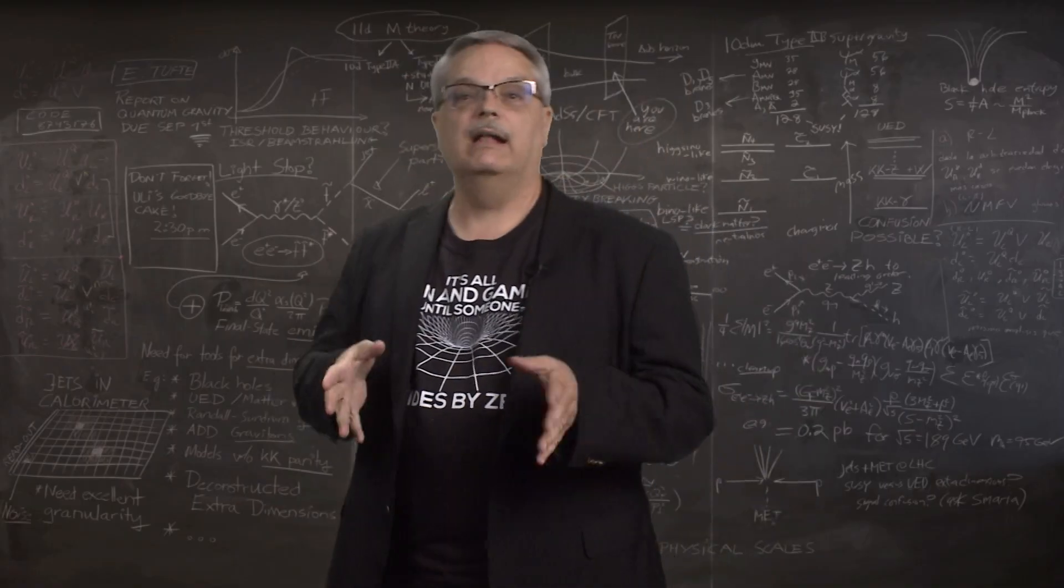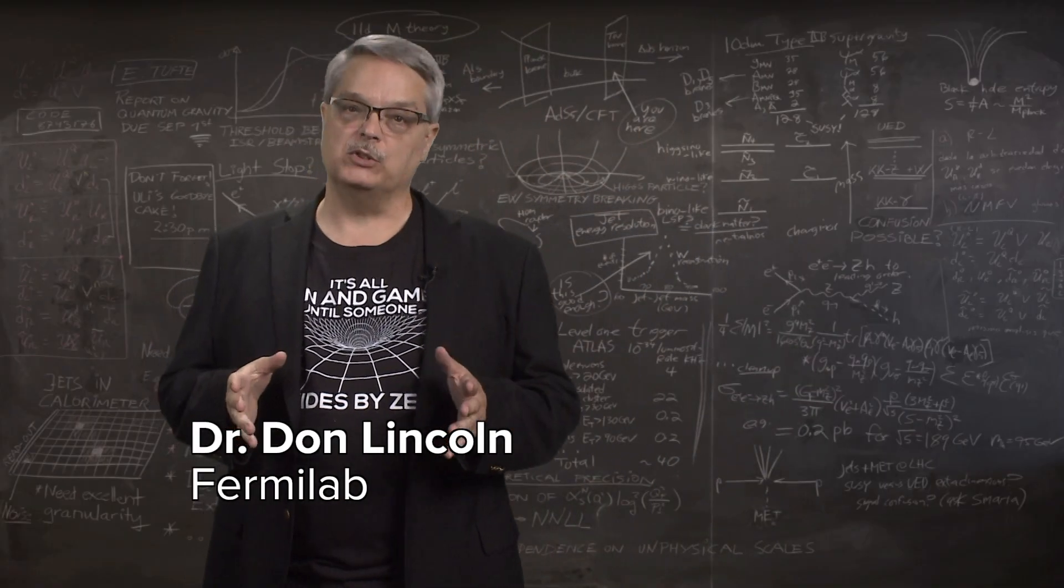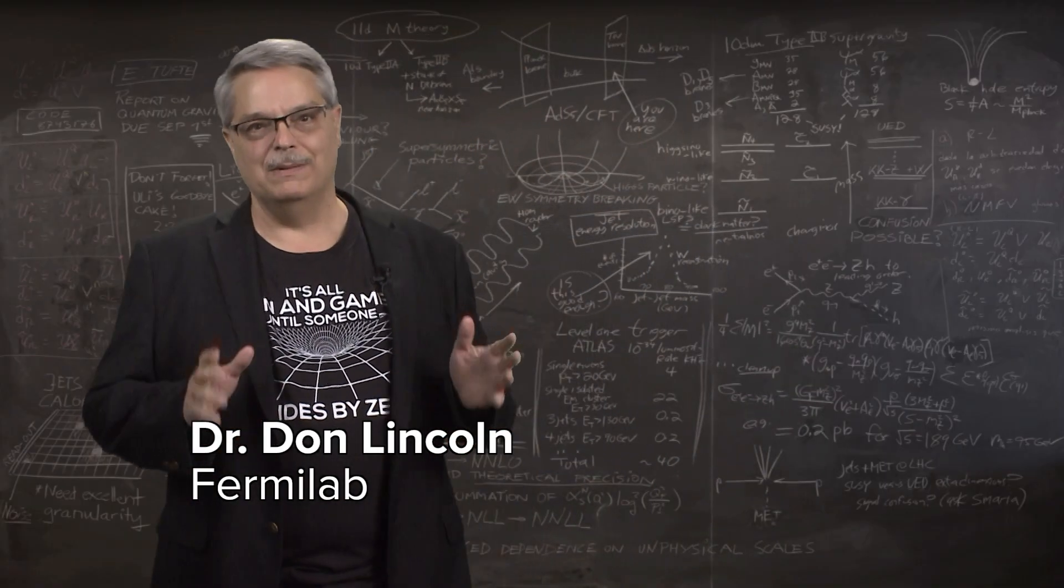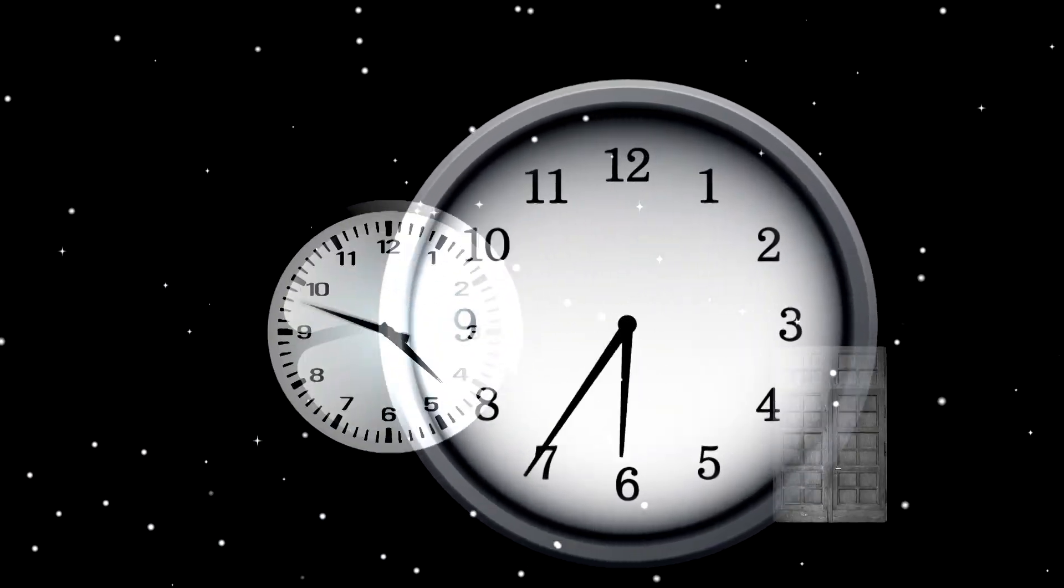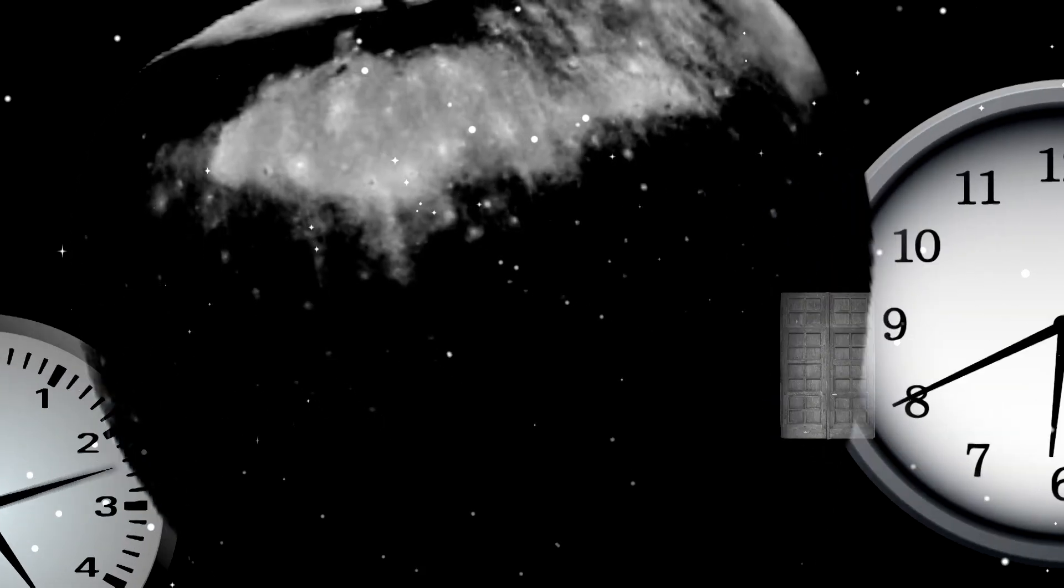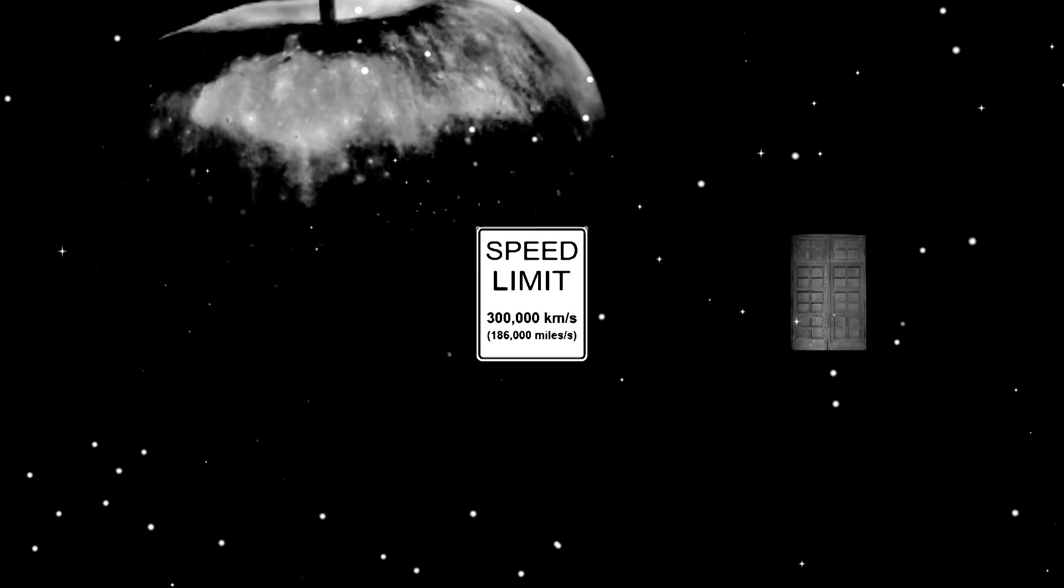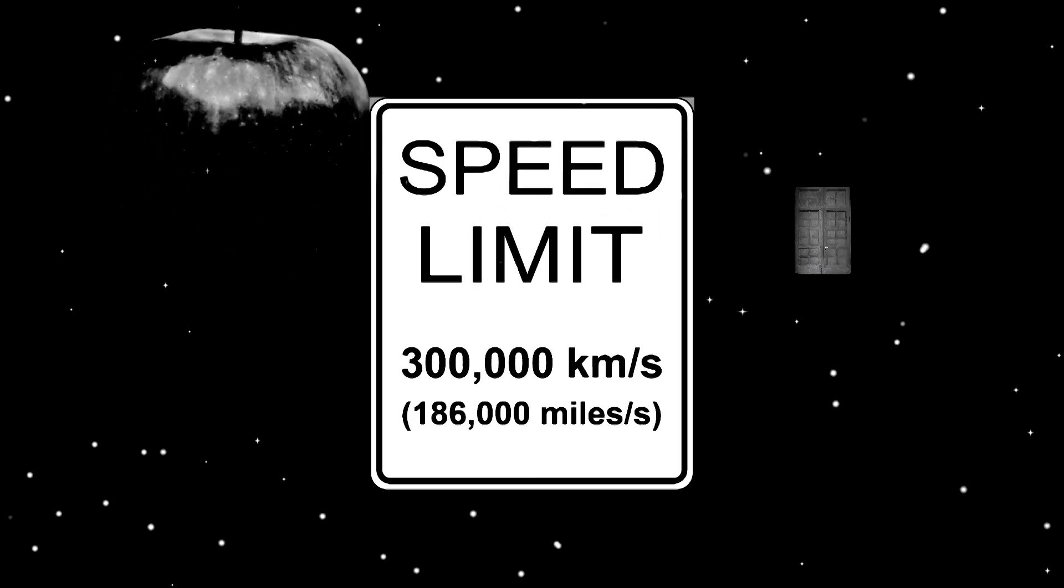Without a doubt, Albert Einstein's theory of special relativity makes some very mind-blowing predictions. Clocks run at different rates, objects shrink, and things can't go faster than light. And all of these things are absolutely true.